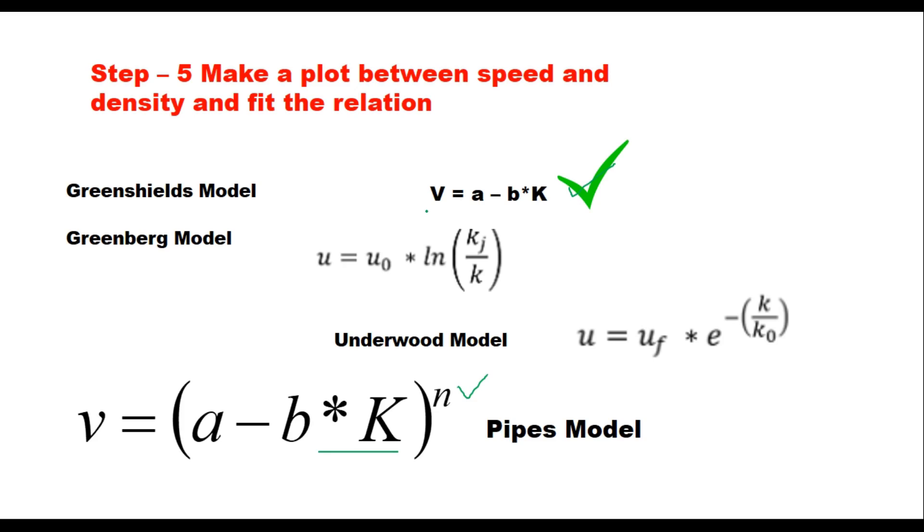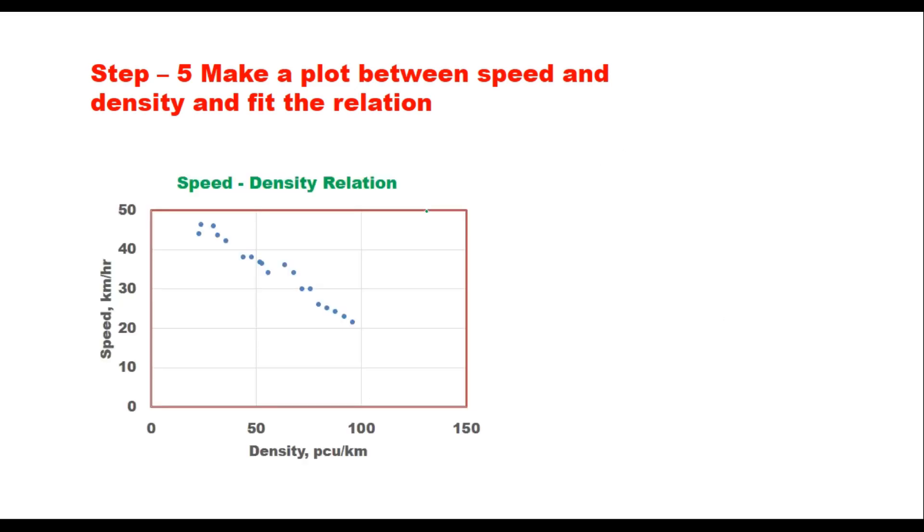So you have this kind of relationship. The speed on y-axis and density on x-axis. Fit a straight line here because the Greenshield model says the speed density relationship is a straight line. Now find out equation of this relationship. Let's say that relationship is V equals 54.6 minus 0.345 K. This is a linear correlation and this equation can be used to find out the capacity.